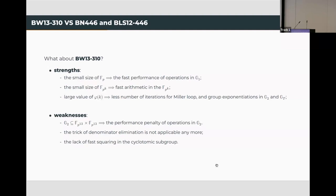On the positive side, due to the small size of the prime field FP, it provides faster operations in G1. In addition, due to the small size of the full extension field, it also provides faster arithmetic in the full extension field. Furthermore, due to the large value of K, the number of iterations for the Miller loop and group exponentiations in G2 and GT is also small.